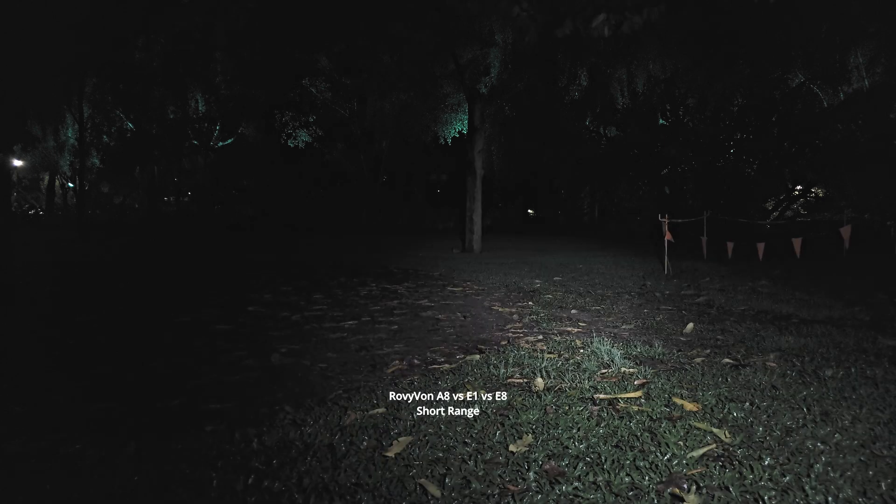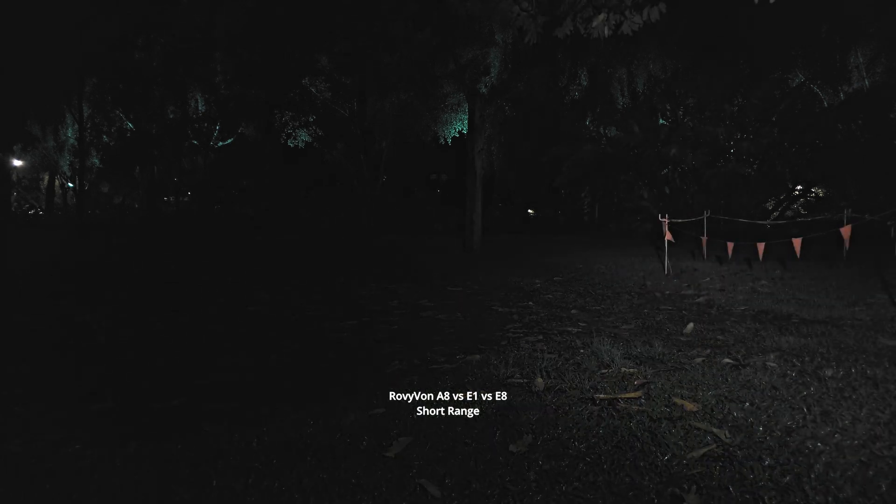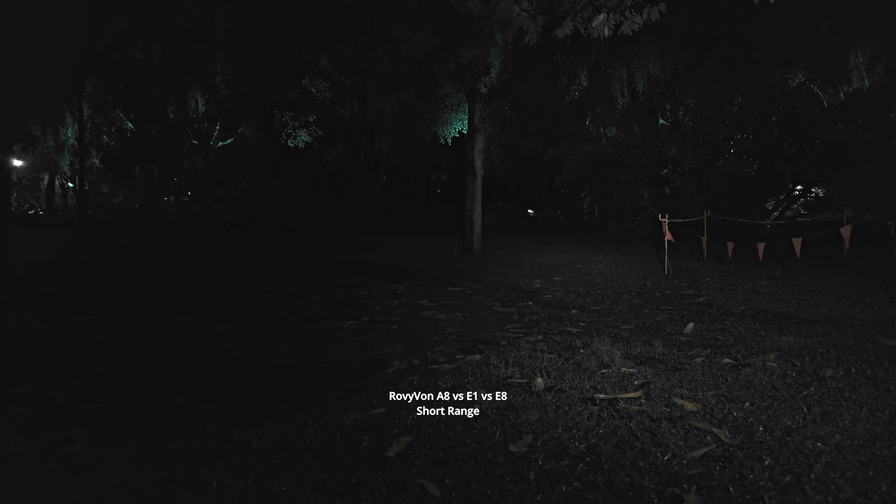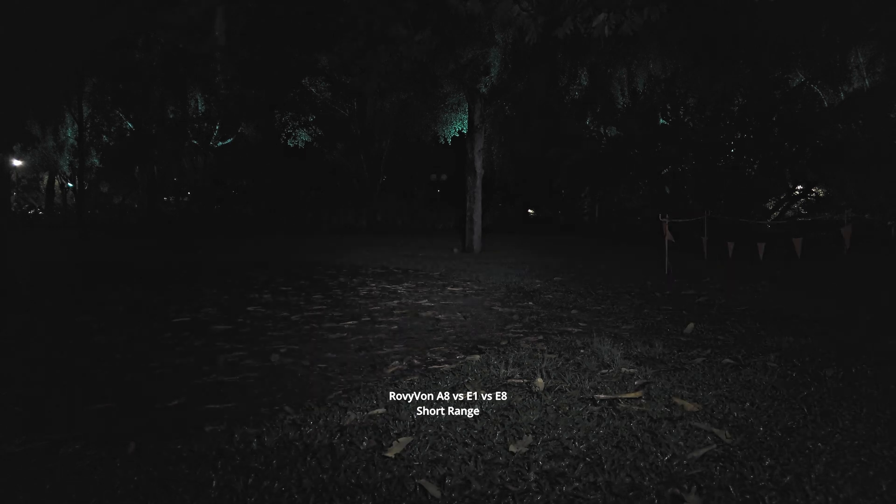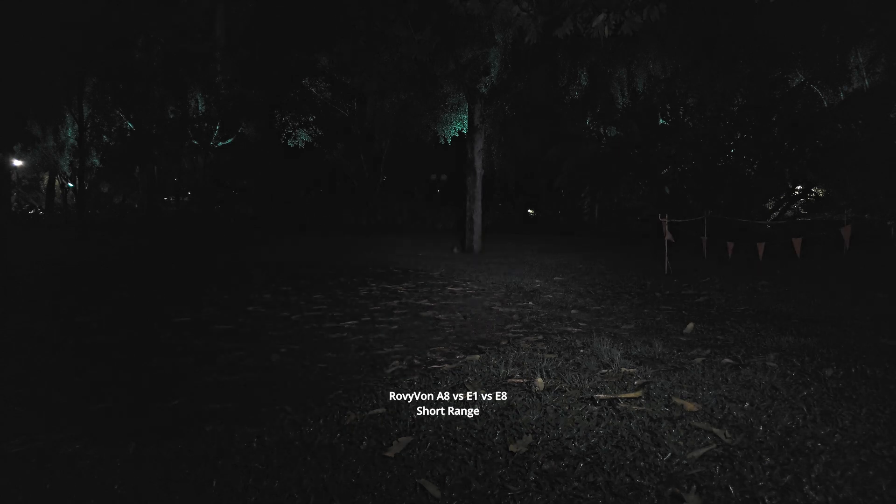I'm going to compare all my Rovivon keychain flashlights. We're going to start out with the A8 first, just using the main LEDs, not the auxiliary LEDs. I'm going to basically put it on to the highest mode, high. And that is really impressive for just a little keychain light. Look how far this thing throws. The beam is also nice and diffused. I'll go for a little walk and show you what it looks like.